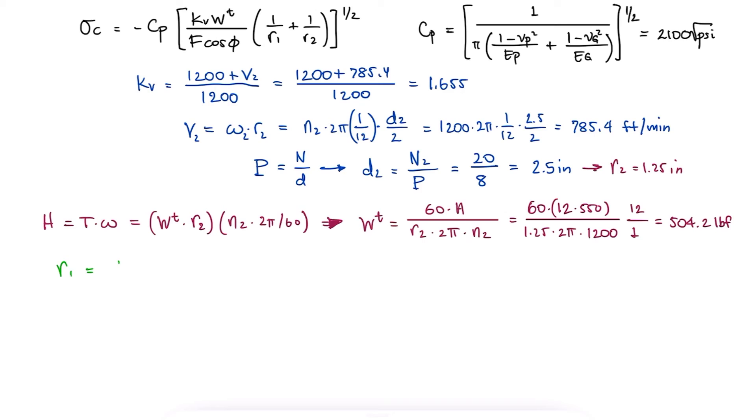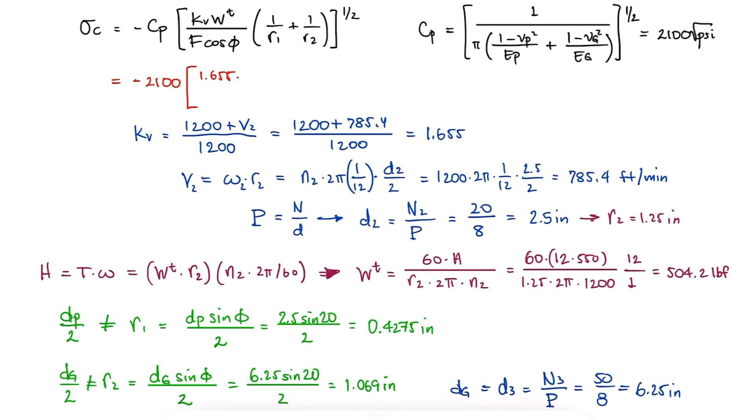The radius variables are those of the radius of curvature for the teeth of the pinion and the gear, not the pitch radius of the gears. Finding the pitch diameter of the gear and therefore the two radii of curvature, we find everything we need to calculate the contact stress.